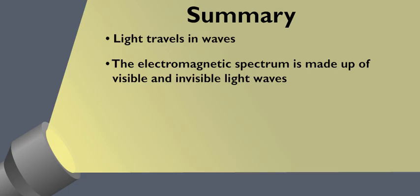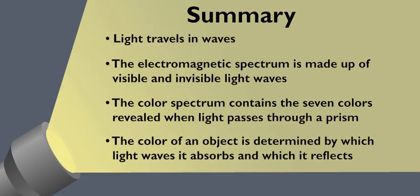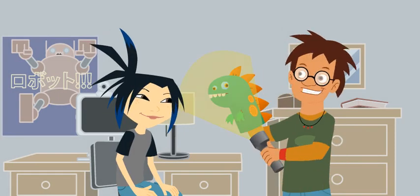Pretty crazy, this light stuff. I mean, it travels in waves, there are visible ones, invisible ones, sun scorchers, even food fryers. And they all make up the electromagnetic spectrum. Then there's the color spectrum inside of that. I always thought light was white. How cool that you can use a prism to separate the waves into all seven colors of the rainbow, and an object's color is determined by which light waves it absorbs and which it reflects. How weird. Totally. But that's nature for you.